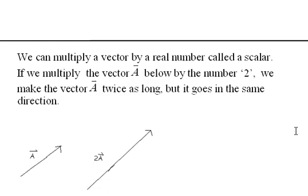We can multiply a vector by a real number called the scalar. If we multiply the vector a below by the number two, we make the vector a twice as long, but it goes in the same direction. So if you have a and 2a is just the same direction, but notice now the vector is twice as long.